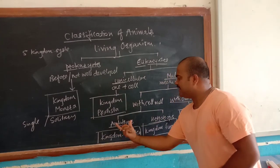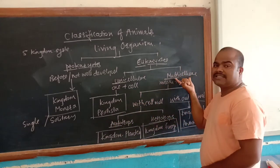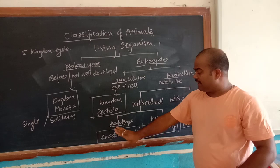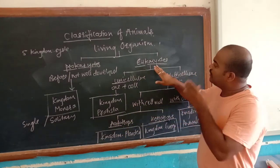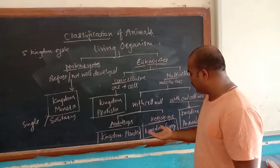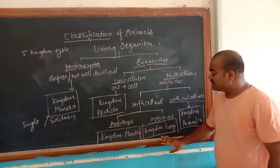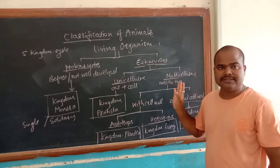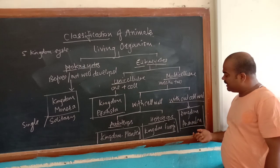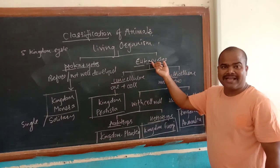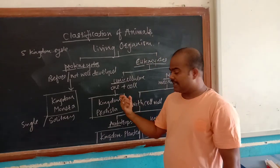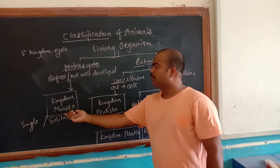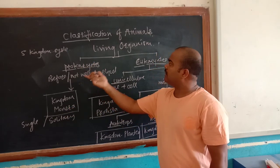Kingdom Plantae is an autotroph, with cell wall, multicellular, eukaryotic living organism. Kingdom Animalia is without cell wall, multicellular, eukaryotic living organism. Kingdom Protista is unicellular, eukaryotic living organism. And Kingdom Monera is the prokaryotic living organism.